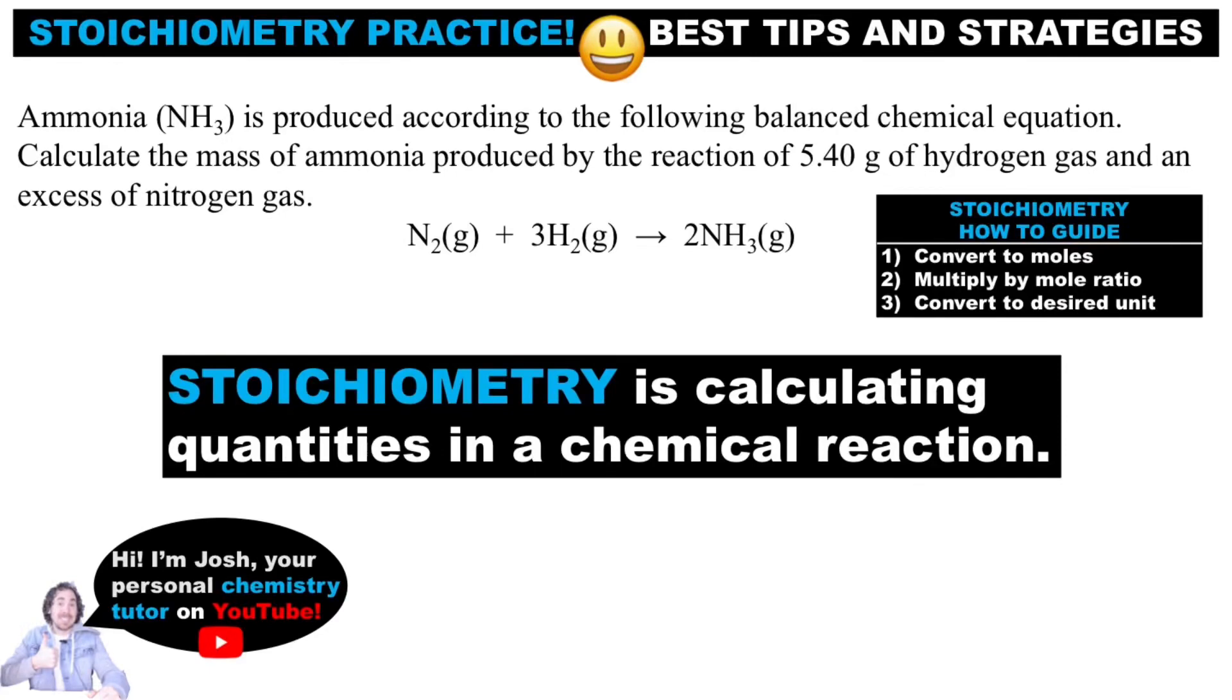Calculating quantities in a chemical reaction is called stoichiometry. Stoichiometry uses a balanced chemical equation to predict amounts based on these coefficients, which are in units of moles.